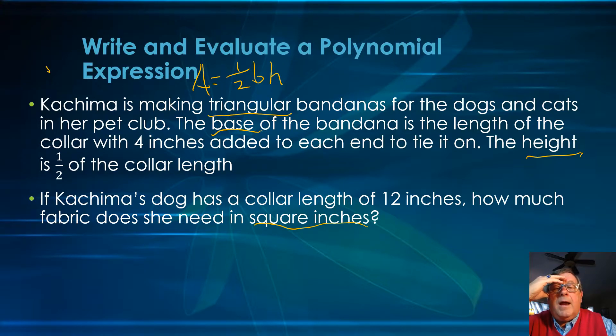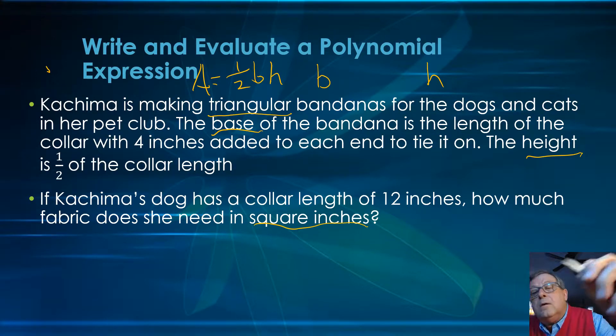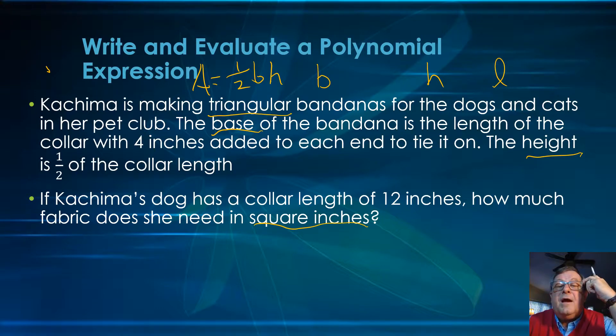We're obviously talking about the area because we've got to have enough fabric to make these bandanas. So let's start defining some variables. B is going to be the base, H is going to be the height, and then we also have information about the length of the collar, L. To find the area, I need to get the base and the height.